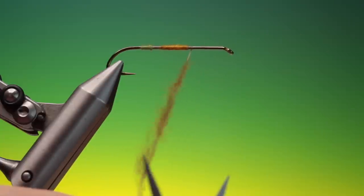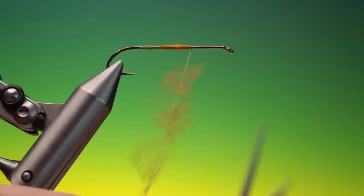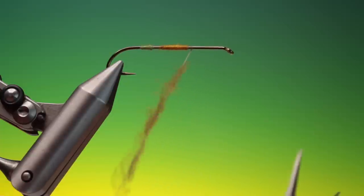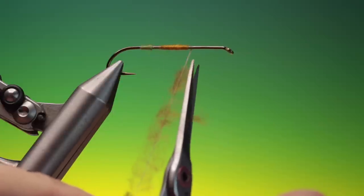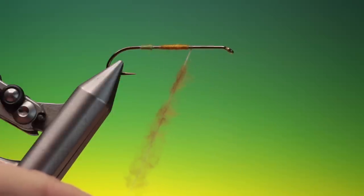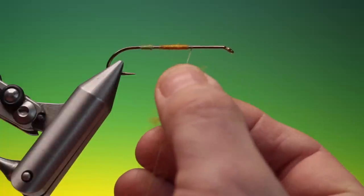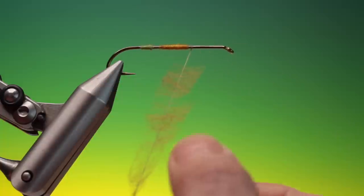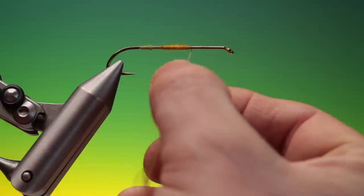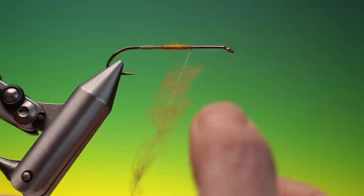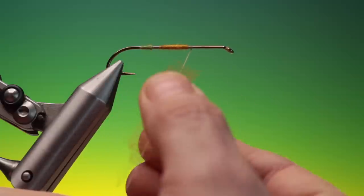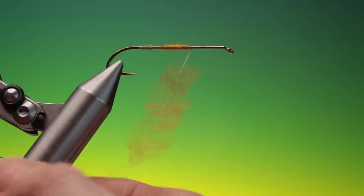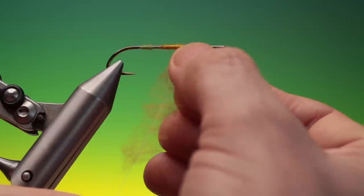And then I can trim this down on the other side. Then what you can do once you've got that, and of course you have to keep your loop closed, you can make the dubbing denser by pushing this up into each other. Or you can make it a lighter dubbing by pulling it away from each other.